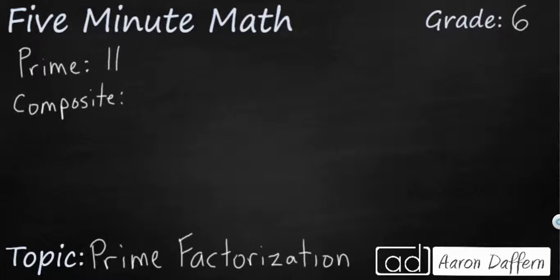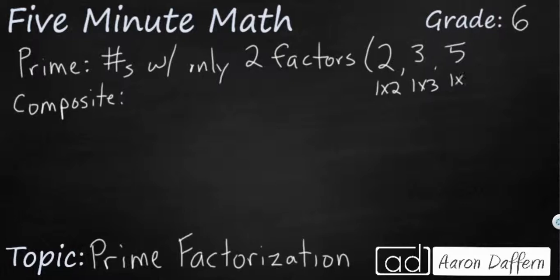Prime numbers are numbers with only two factors. Factors are numbers you multiply to get a larger product. Some examples would be 2, the only way to get to 2 is 1 times 2. Then 3, 1 times 3. Then 5, 1 times 5. And then it goes on: 7, 1 times 7. And then we have 11, 1 times 11. So those are the first 5, but it goes on. Now you notice I skipped some.